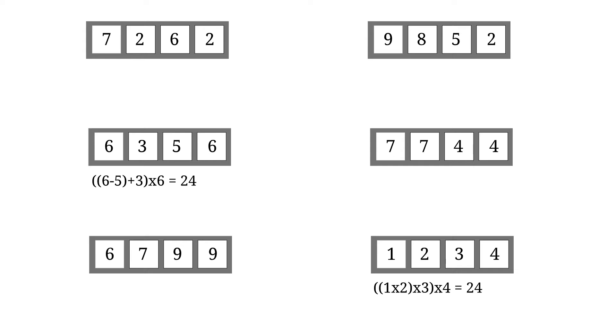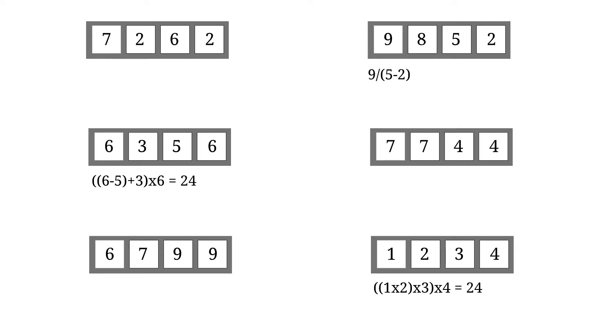Let's do 9, 8, 5, 2. You can do 5 minus 2 is 3, then 9 divided by 3 is 3, and 8 times 3 is 24.